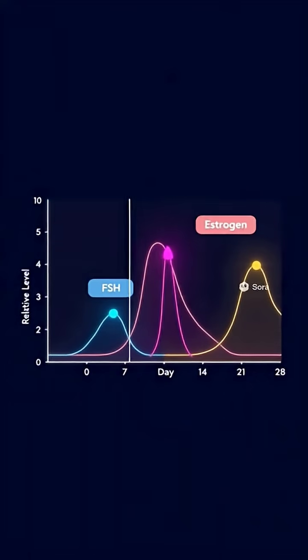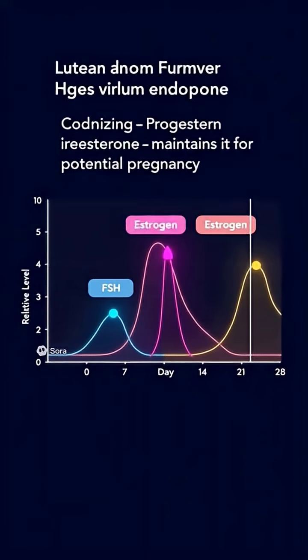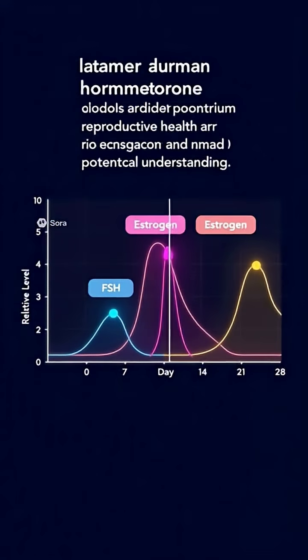To summarize the key hormones: follicle-stimulating hormone, or FSH, stimulates follicle development. Luteinizing hormone, LH, triggers ovulation. Estrogen rebuilds the endometrium, and progesterone stabilizes it for implantation.